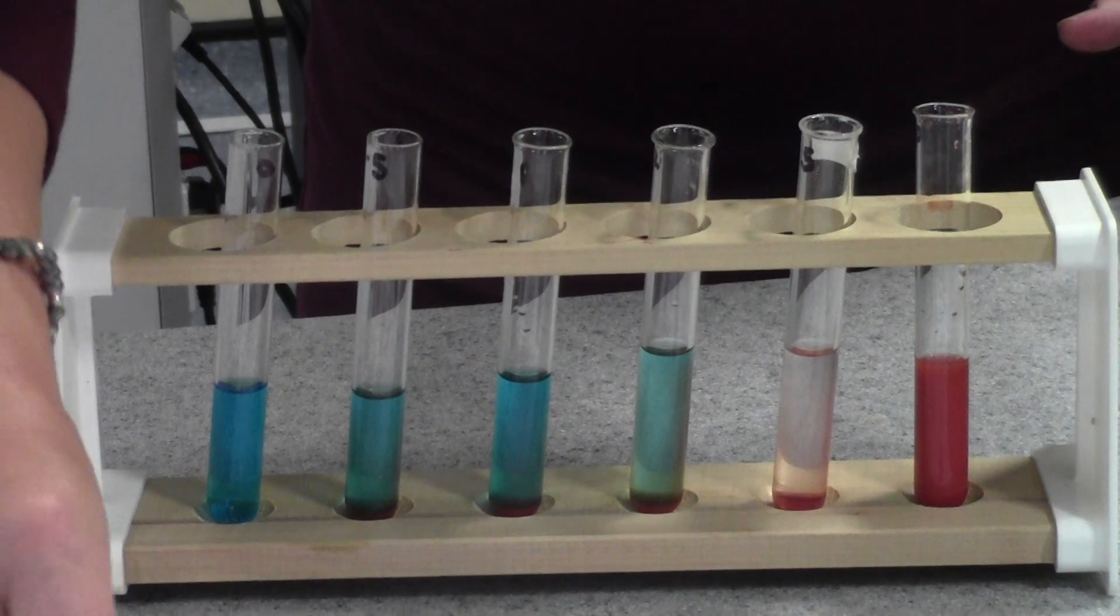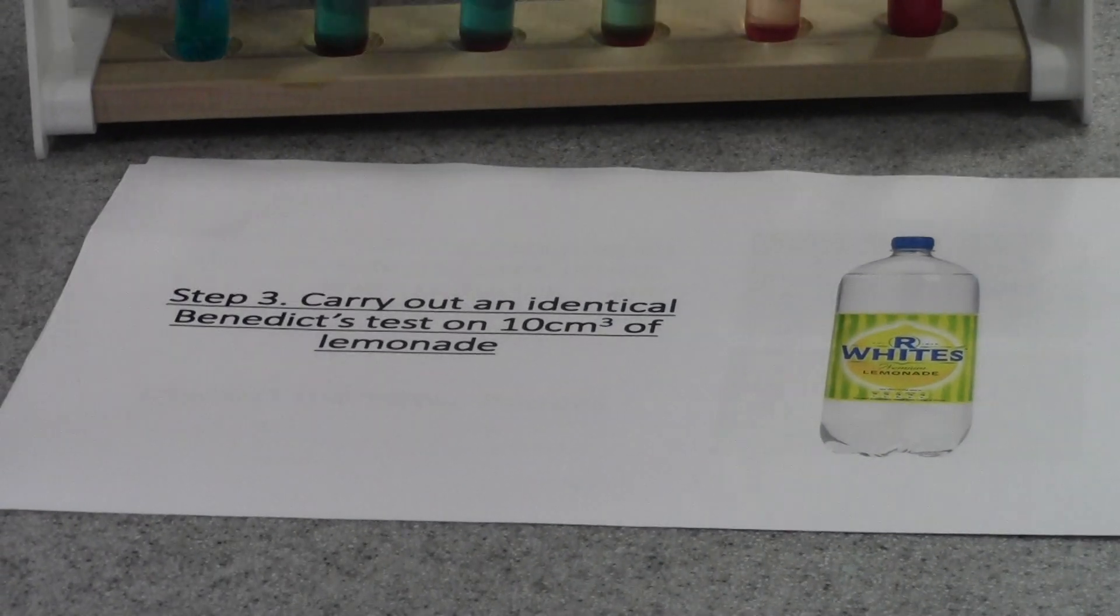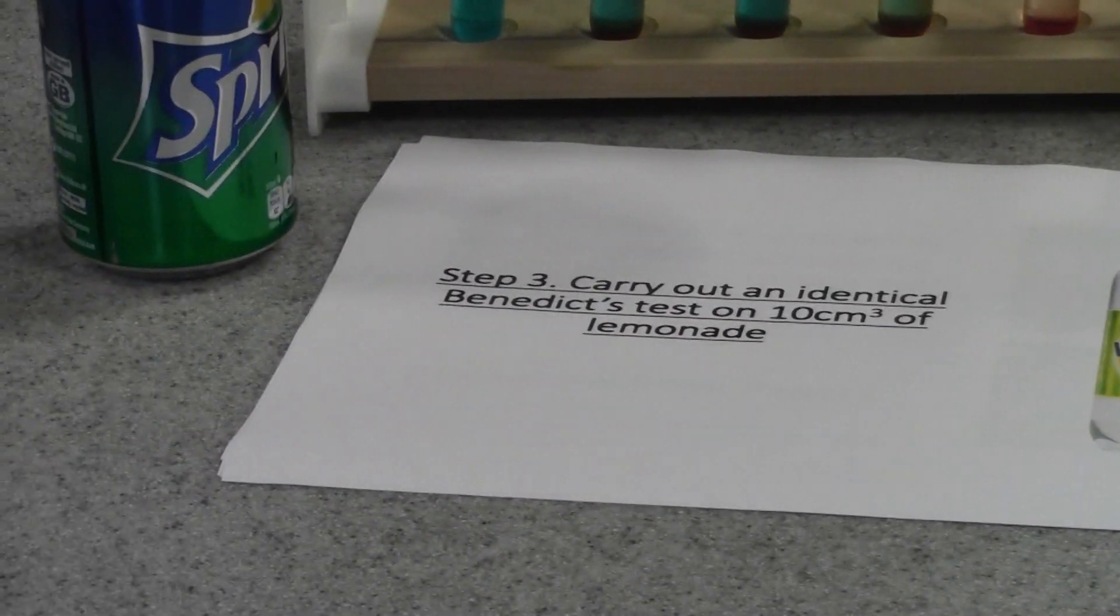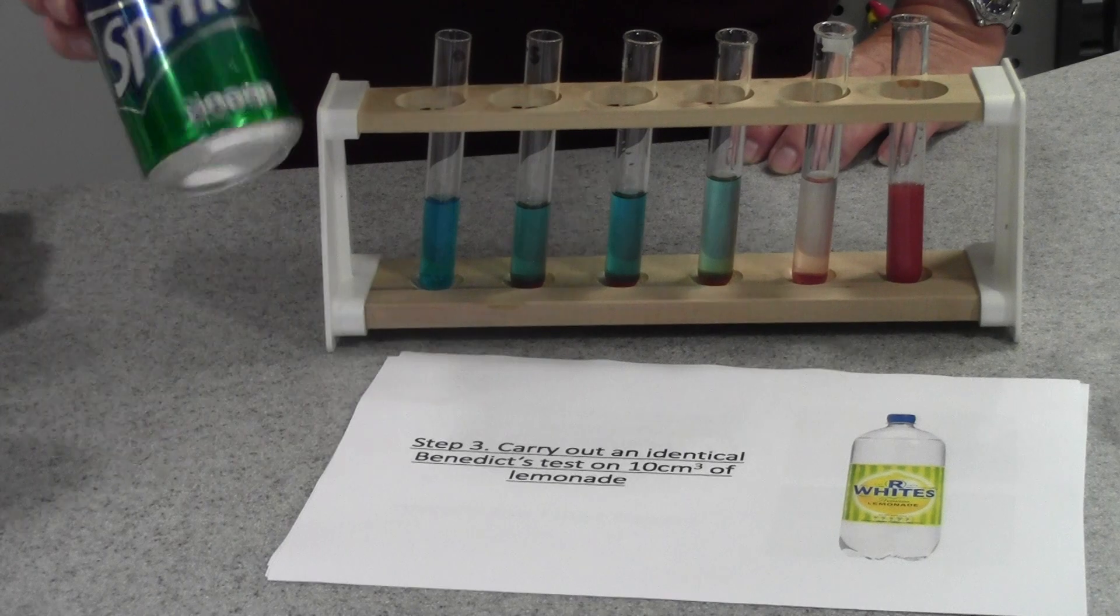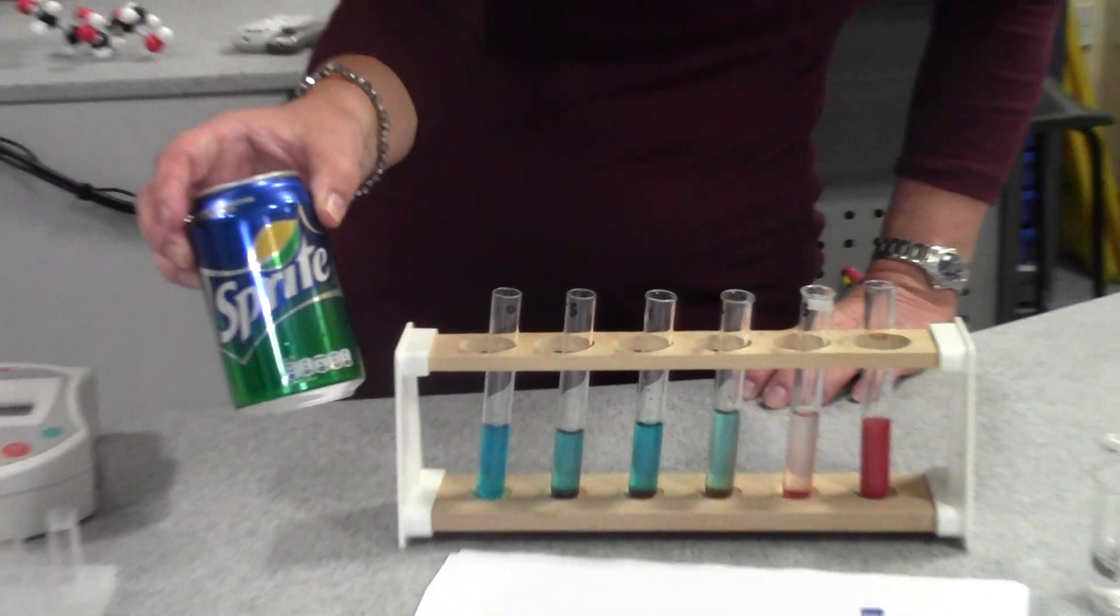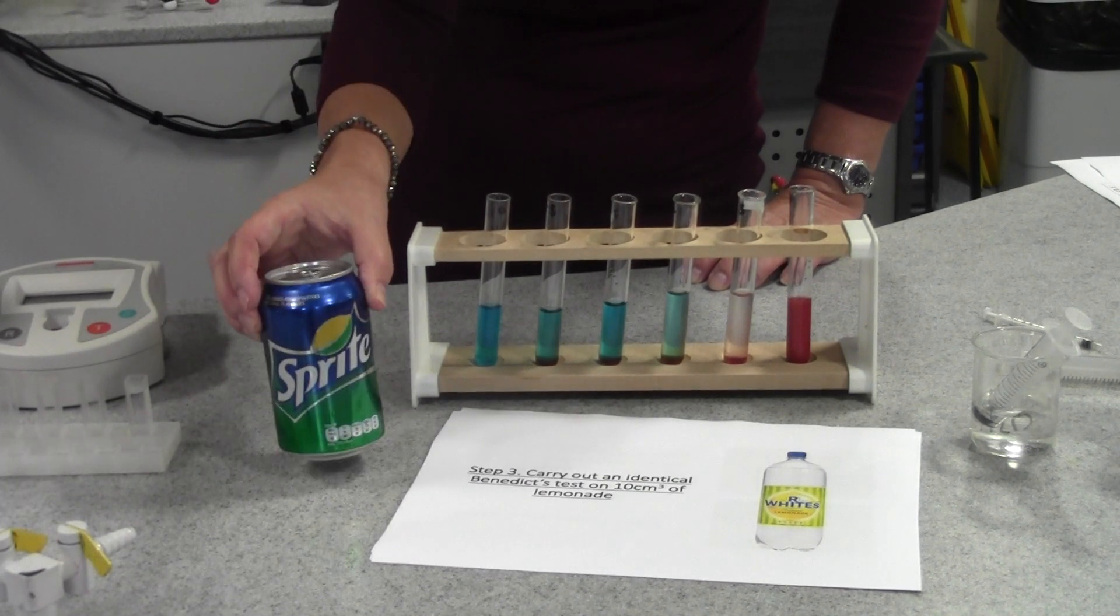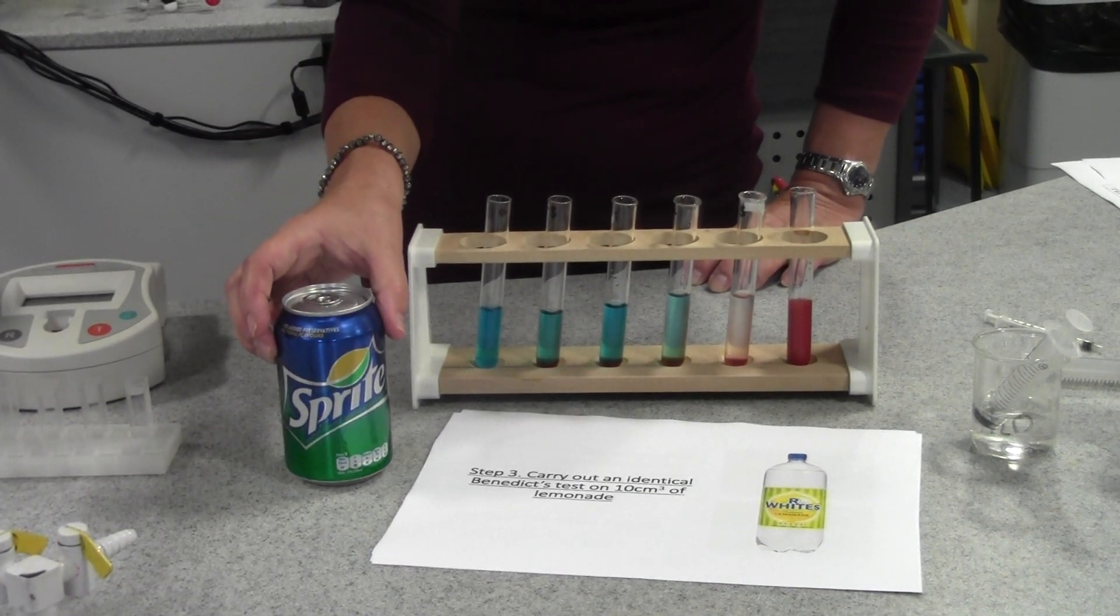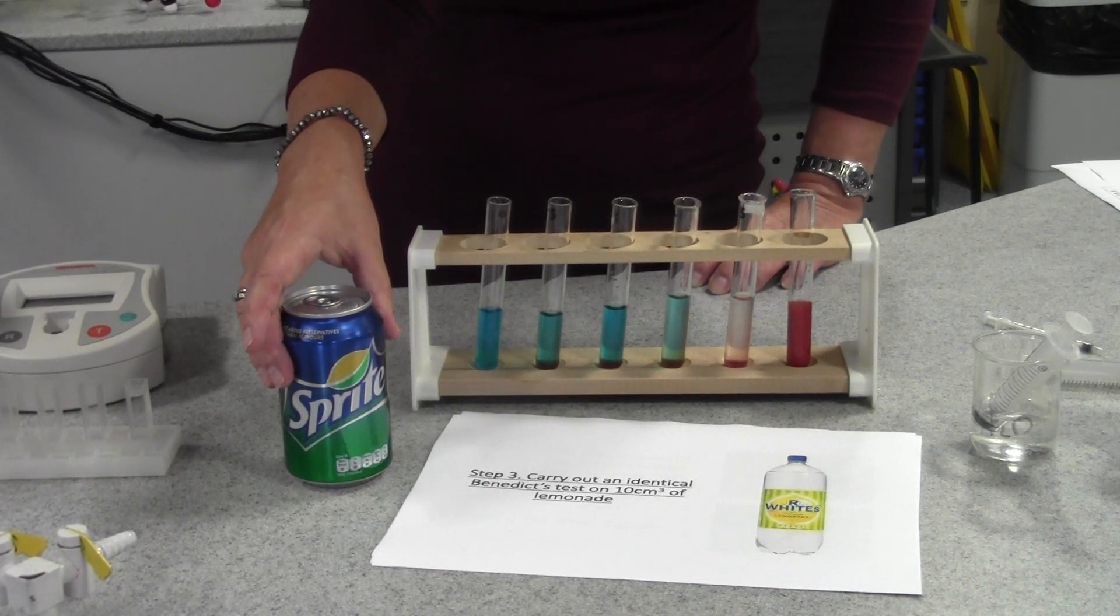As well as testing the standard glucose solutions, you also need to carry out an identical Benedict's test using 1 centimeter cubed of your drink—and do make sure you don't use sugar-free. So 1 centimeter cubed of that, again with 5 centimeters cubed of Benedict's solution, in a water bath at 90 degrees Celsius for 5 minutes for the reaction to take place.